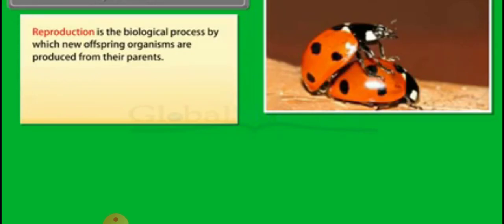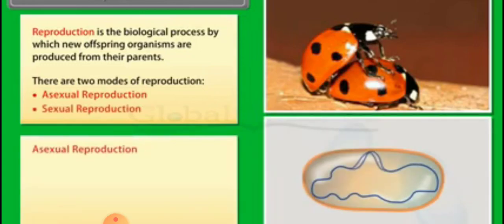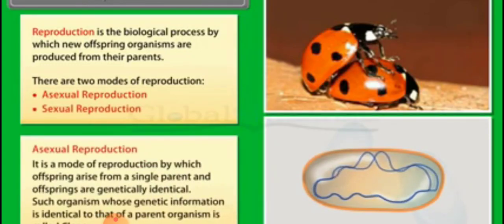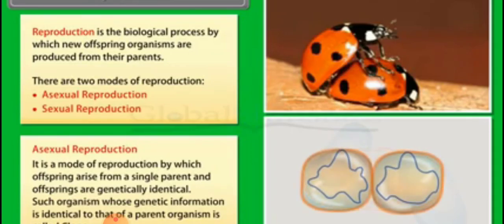Reproduction is the biological process of formation of new offspring from their parents. It is basically carried out by two modes, that is asexual and sexual reproduction, wherein asexual reproduction involves the simple process of mitosis, that is division of parent into two daughter cells without the fusion of gametes.